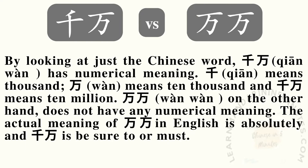By looking at just the Chinese word, 千万 has a numerical meaning. 千 means thousand, 万 means ten thousand, and 千万 means ten million. 万万, on the other hand, does not mean ten thousand ten thousand — the actual meaning of 万万 in English is 'absolutely,' and 千万 means 'be sure to' or 'must.'